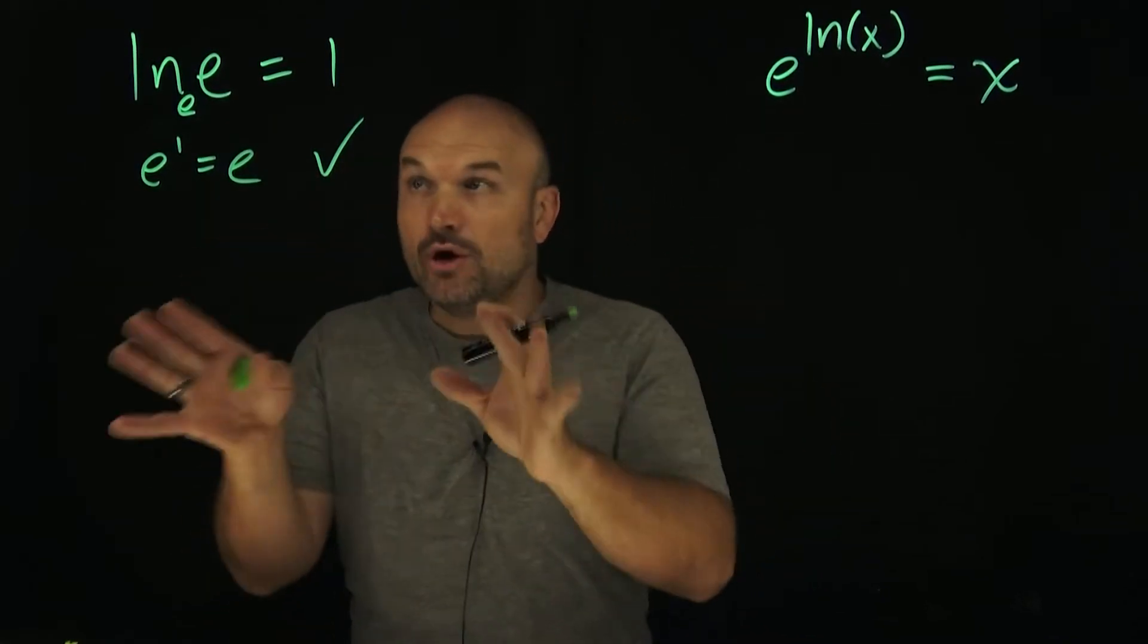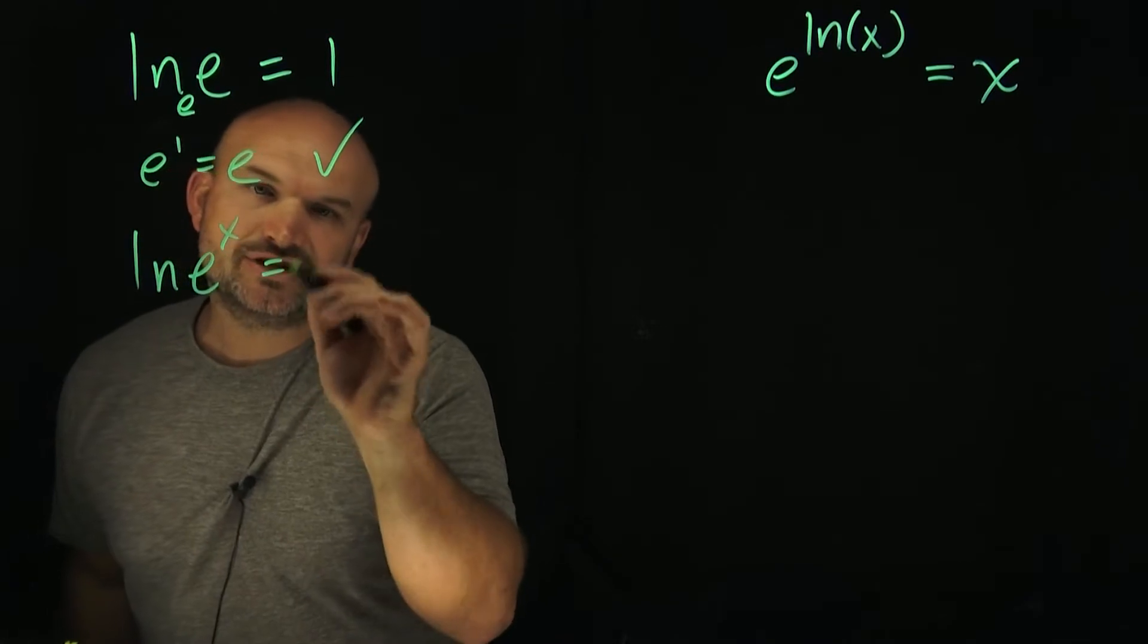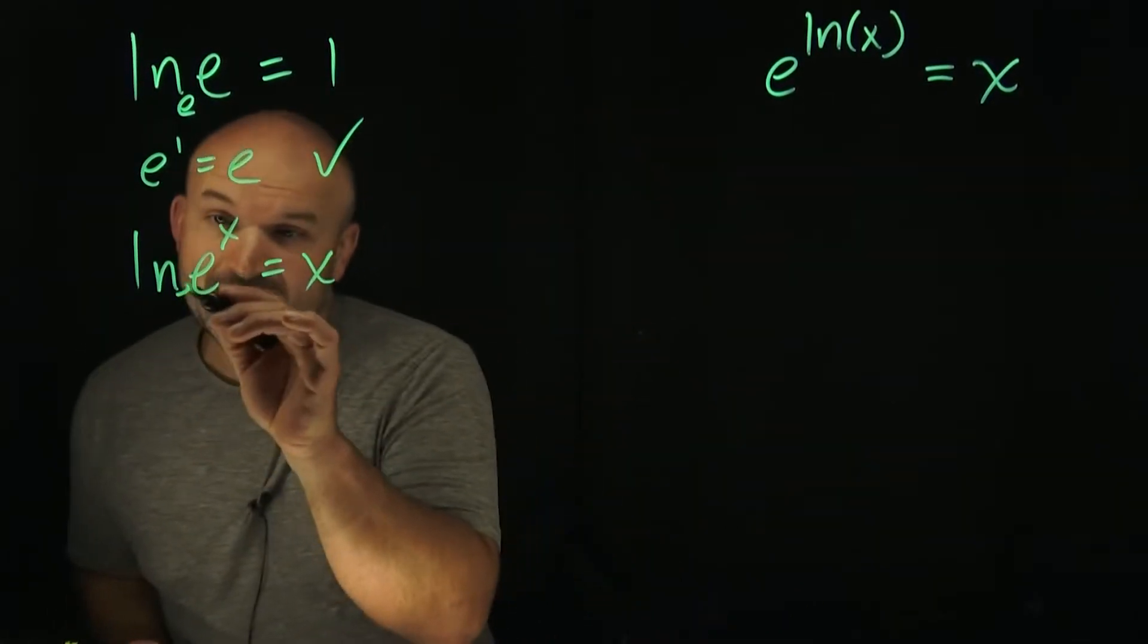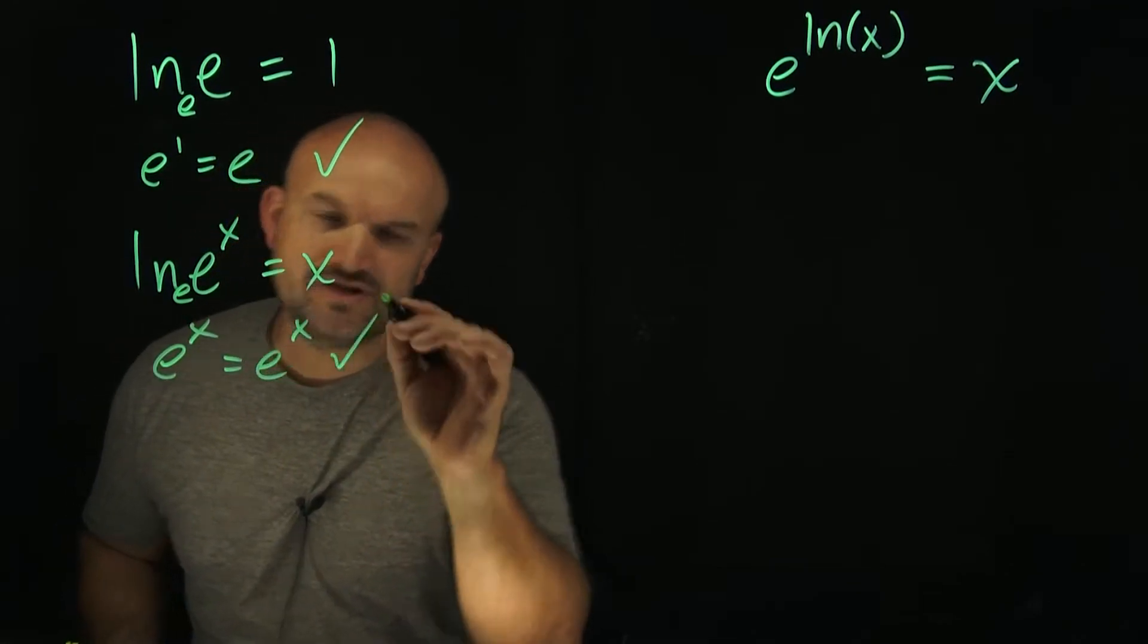Now, the next property that is so important that many students remember is ln of e raised to the x equals x. Again, this makes sense if you rewrite it in exponential form: e to the x equals e to the x. So you can see how it works.